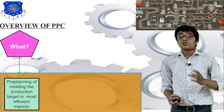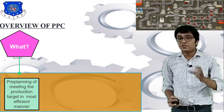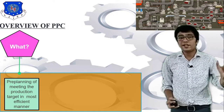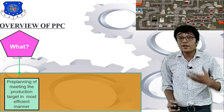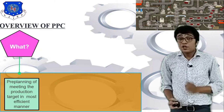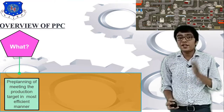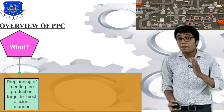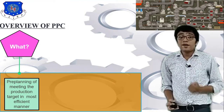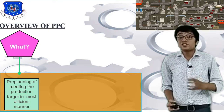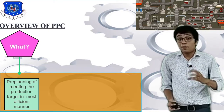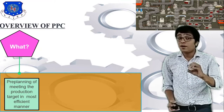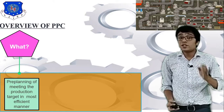First of all, Production Planning and Control is a combination of three words. The first word is production — production means to convert raw material into a final product. The second word is planning, which depends on operation planning, product layout planning, and worker load planning.